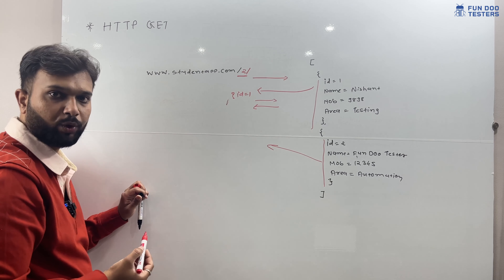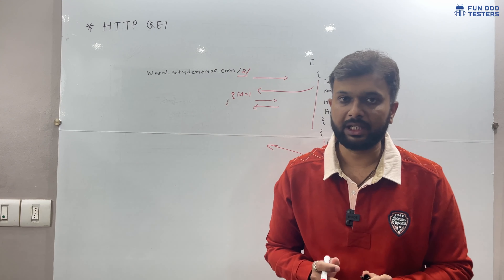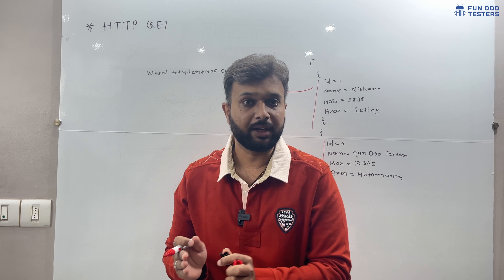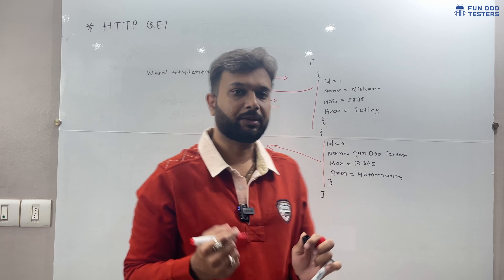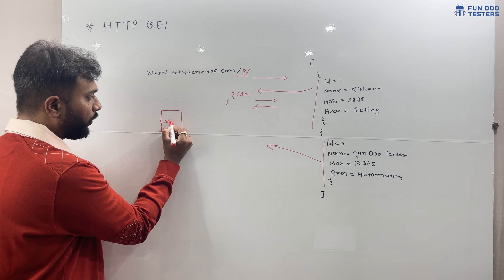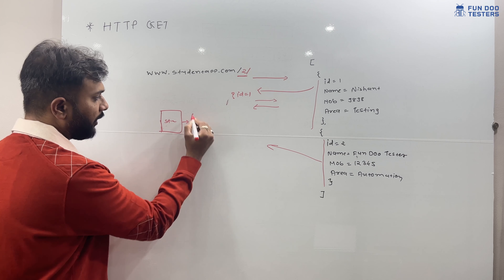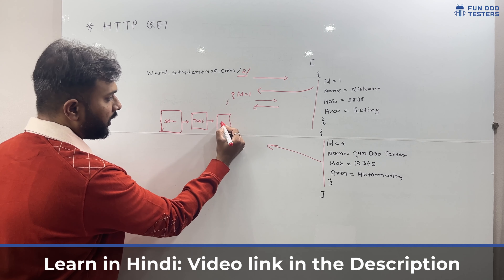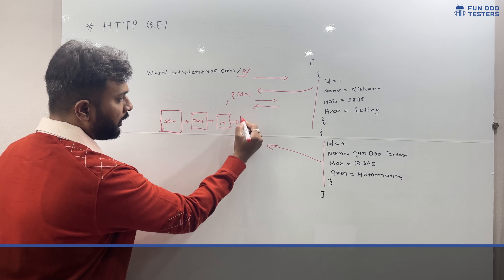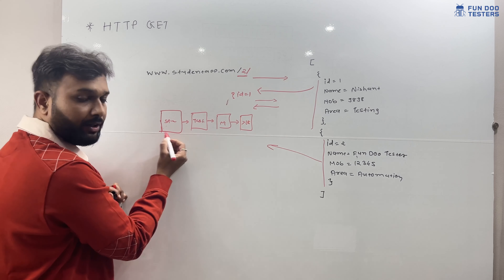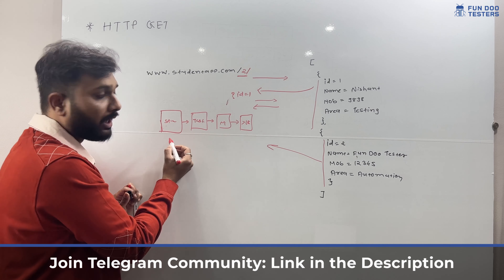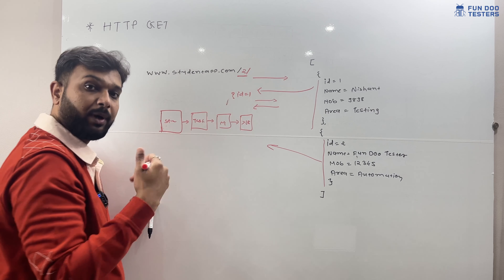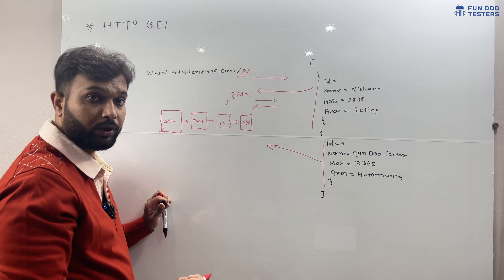Now the question is: what is a path parameter and what is a query parameter? A path parameter is used when we have to follow a hierarchical structure — like a folder structure. For example, a folder 'student', inside that a folder 'testing area', then 'male student', then 'below age 18'. When there is such a hierarchy, we use a path parameter.